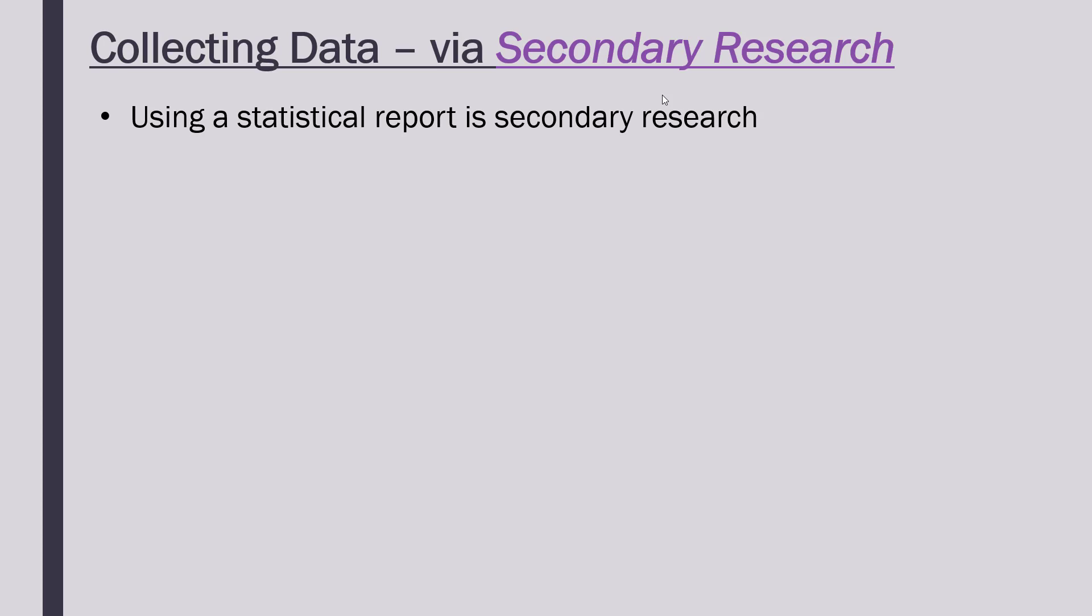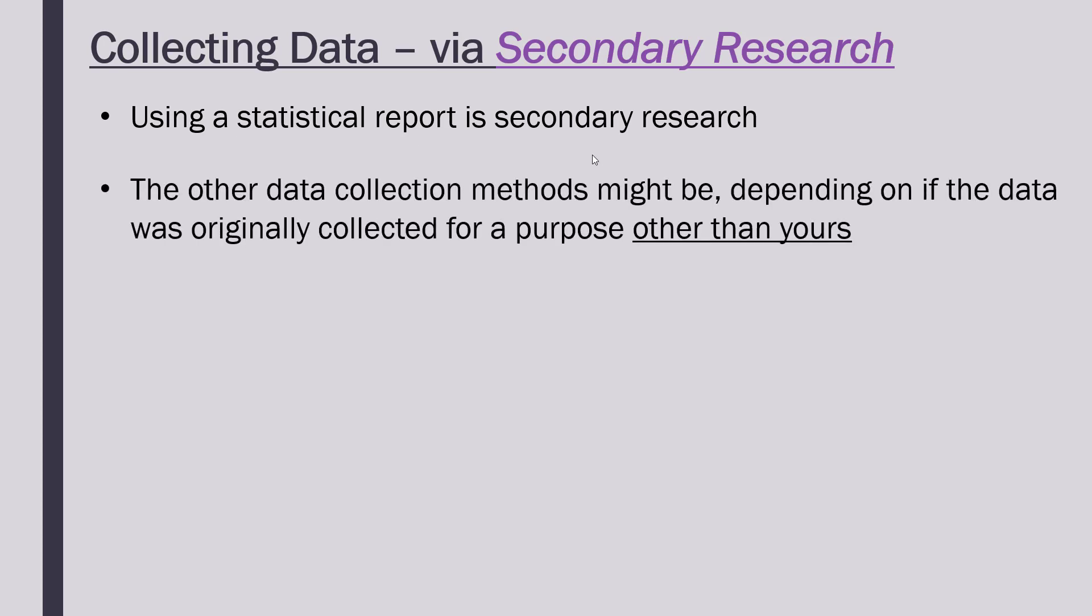The only method we've looked at so far which is definitely secondary research is the statistical reports, because they were done by someone else. Someone else has created them, we're just using them, which is the definition of secondary research. Primary research, on the other hand, is done by ourselves.